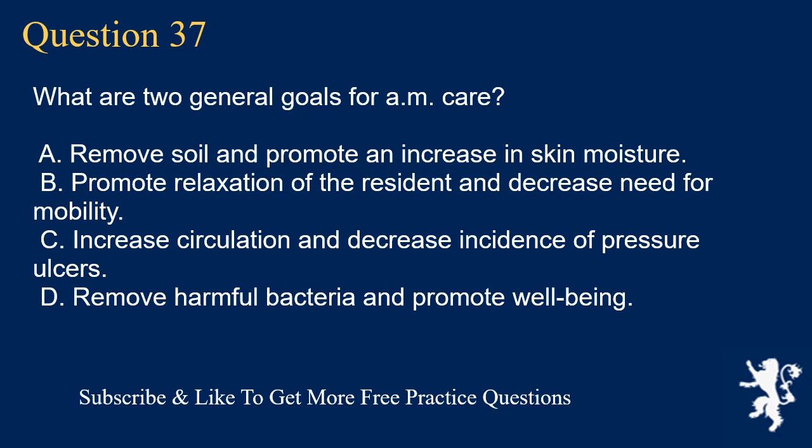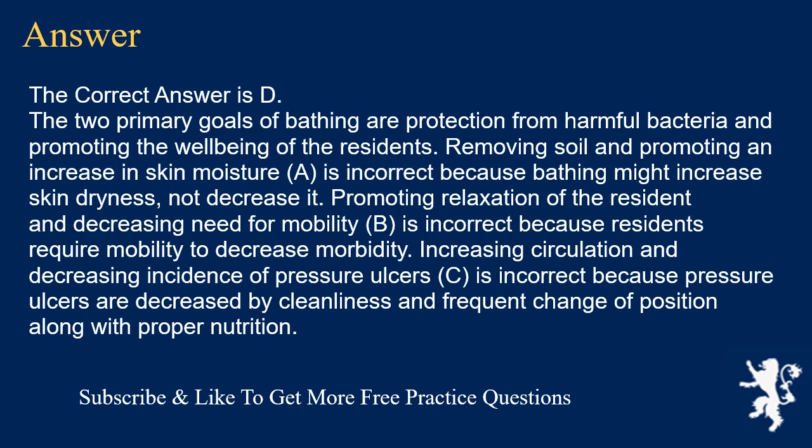Question 37. What are two general goals for AM care? A. Remove soil and promote an increase in skin moisture. B. Promote relaxation of the resident and decrease need for mobility. C. Increase circulation and decrease incidence of pressure ulcers. D. Remove harmful bacteria and promote well-being. The correct answer is D. The two primary goals of bathing are protection from harmful bacteria and promoting well-being. Option A is incorrect because bathing might increase skin dryness. Option B is incorrect because residents require mobility to decrease morbidity. Option C is incorrect because pressure ulcers are decreased by cleanliness, frequent repositioning, and proper nutrition.